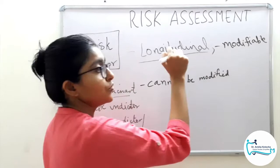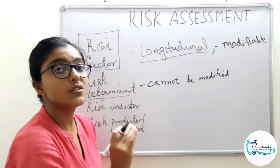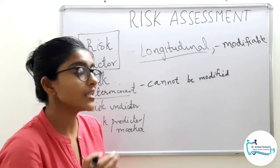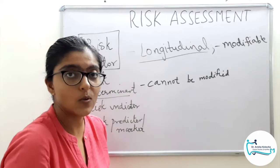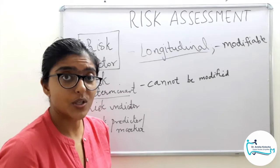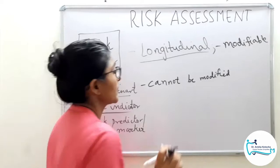In contrast to risk factors, which are modifiable, Risk Determinants or Background Characteristics — the name itself suggests they determine the risk and are background characteristics. They cannot be modified. Examples of these non-modifiable risk determinants or background characteristics are mainly age, gender, stress, and socioeconomic status. These are things which cannot be modified.